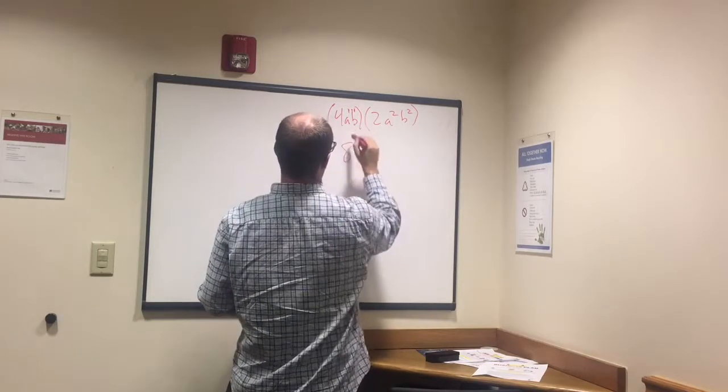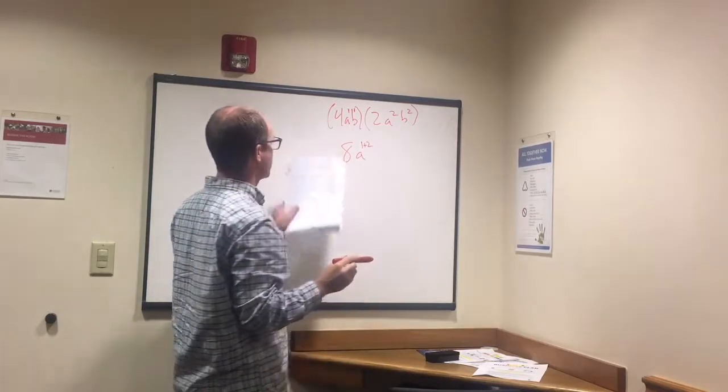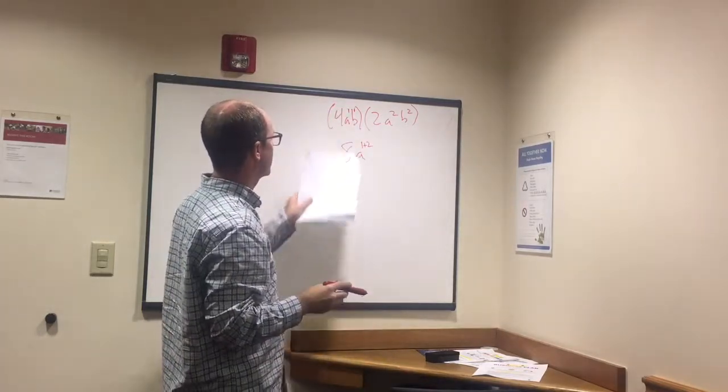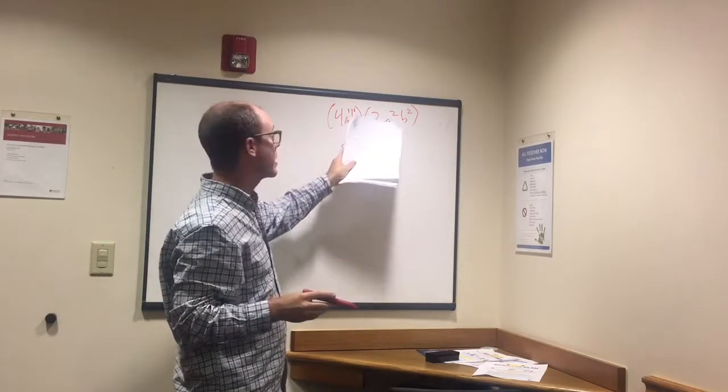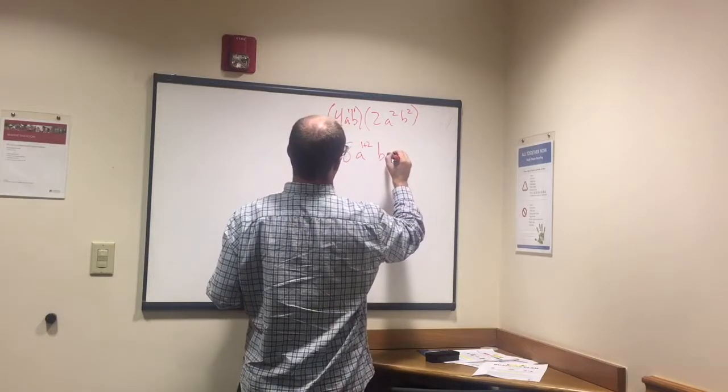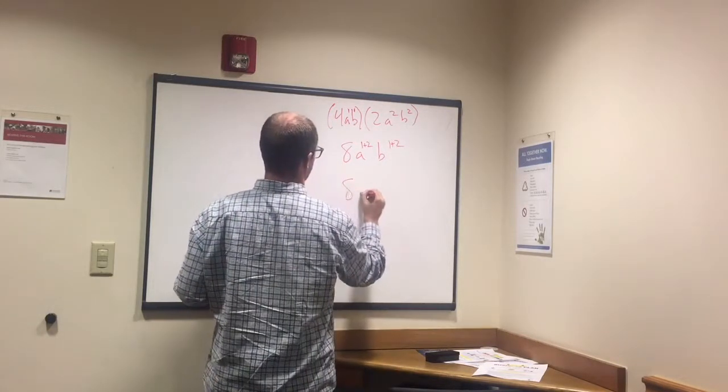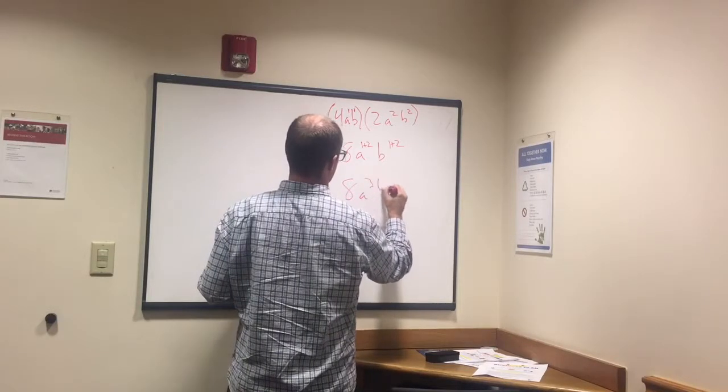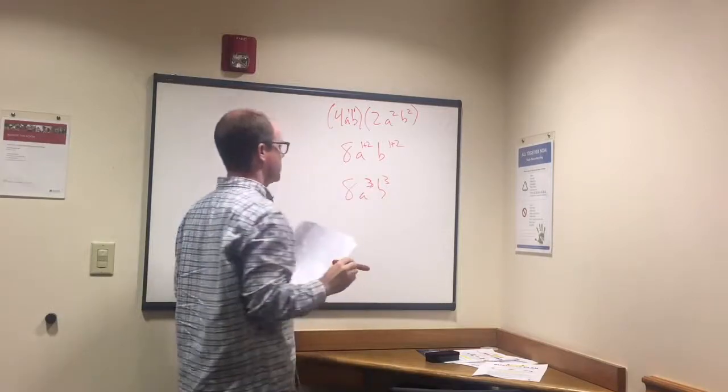To the 1 plus 2, of course it's 3, right? We just added the 1 which is the exponent for the a here and the 2 which is the exponent for the a over here. And b also to the 1 plus 2. And what this equals is 8a to the third b to the third.